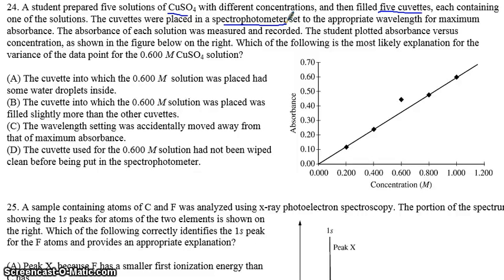The absorbance was measured and recorded. And then it was plotted, just like we created a graph, to show the plots on the right. Which of the following is the most likely explanation for the variance of the data point? So this data point right here, notice does not go along with the line, and we want to know the reasoning for it. Let's go through the options and decide which one is best.